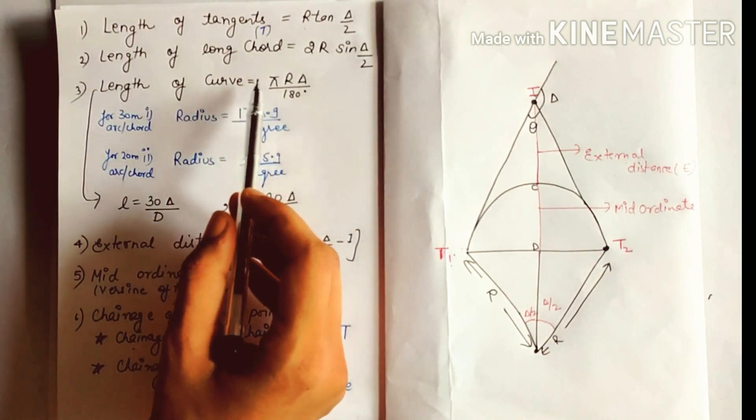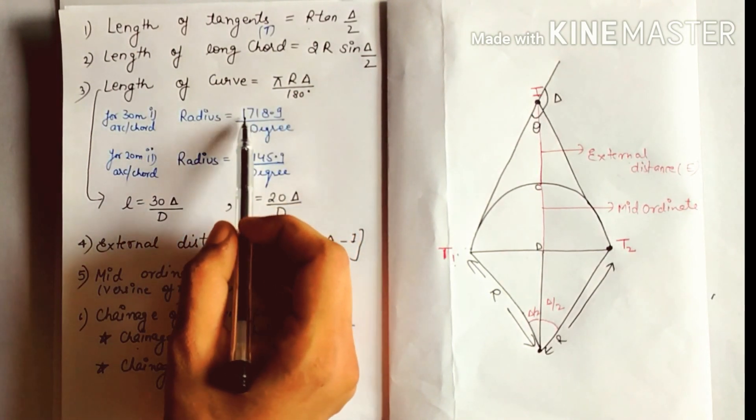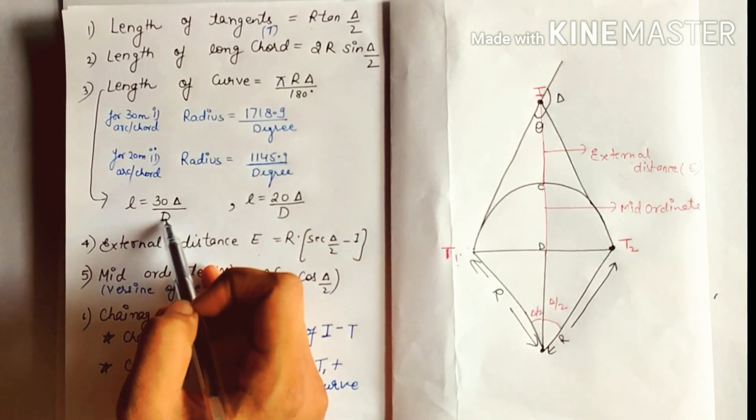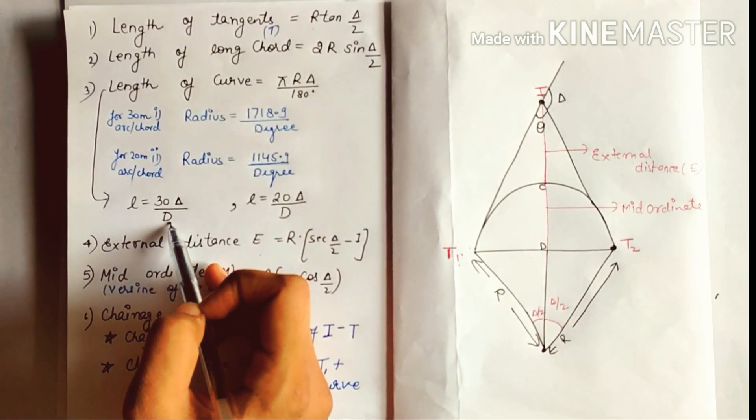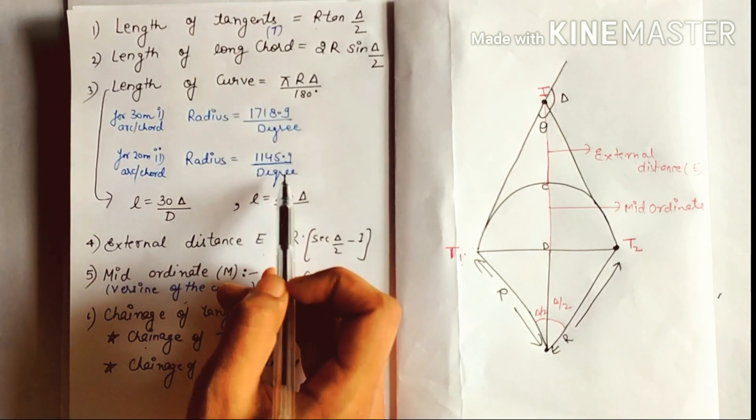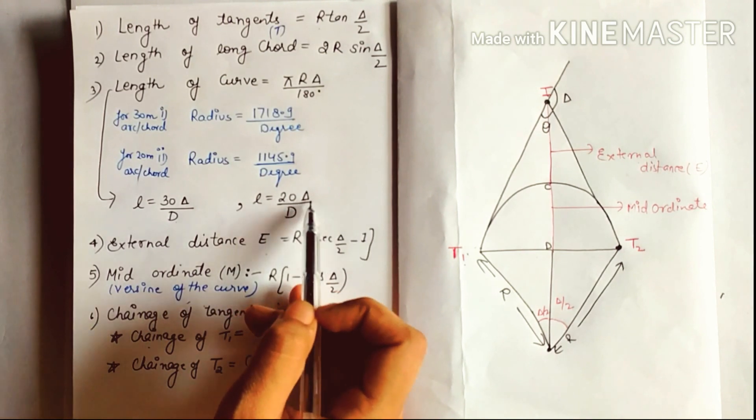Length of curve: πRΔ/180. If we put the value of radius as 1718.9/degree, then the length of curve will become 30Δ/D. If we put the radius value 1145.9/degree, then the length of curve will become 20Δ/D.